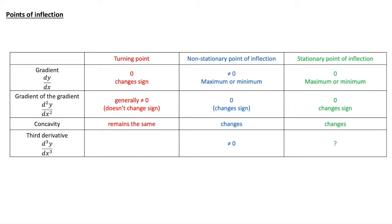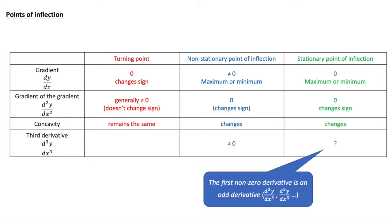The concavity is changing — that's what a point of inflection is. To test whether we have a stationary point of inflection or a turning point when we get zero for both the first two derivatives, we can use the third derivative. If the third derivative is non-zero, that tells us we have a stationary point of inflection, but it can still be zero.